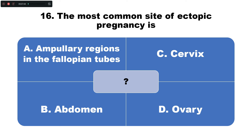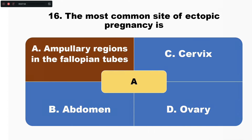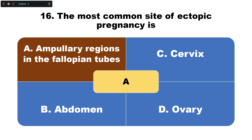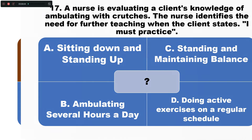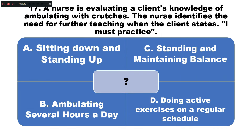Question number sixteen: The most common site of ectopic pregnancy is — option A: ampullary region of the fallopian tube, B: abdomen, C: cervix, D: ovary. The correct answer is option A — the ampullary region of the fallopian tube is the most common site of ectopic pregnancy.